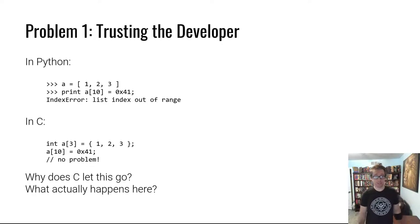that C trusts the developer. In Python, if you create a list with three elements in it and you try to access the 11th element, Python will tell you no, this list only has three elements. It'll throw an exception and you can fix your code. C won't do that. In fact, C cannot do that.